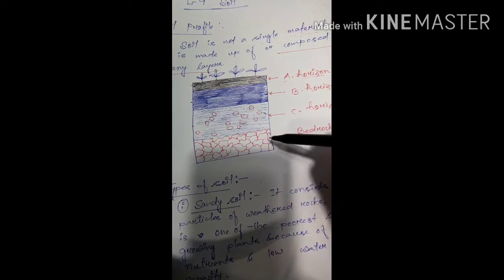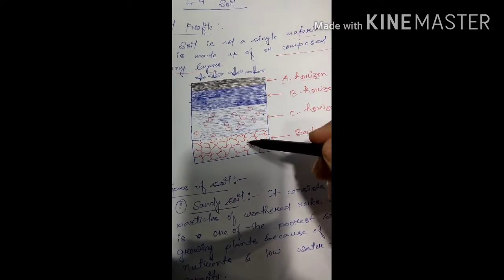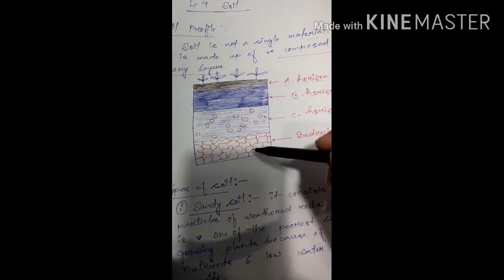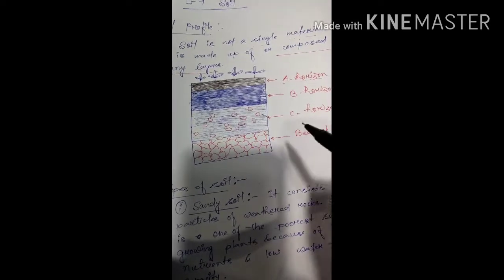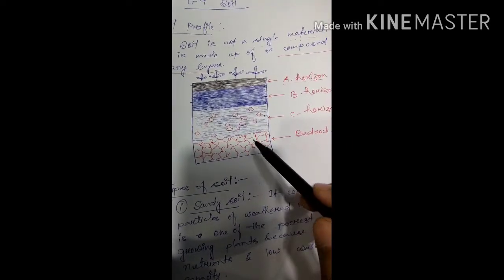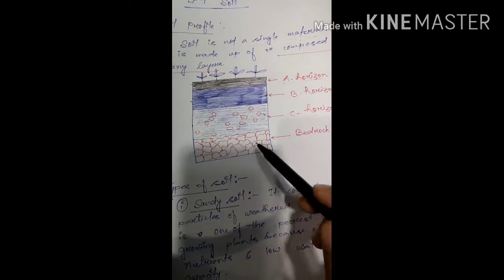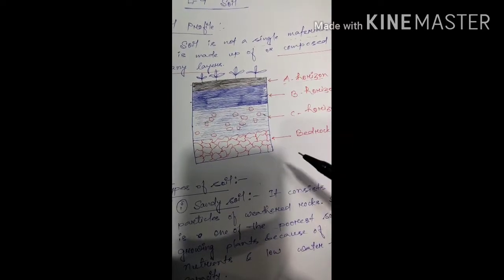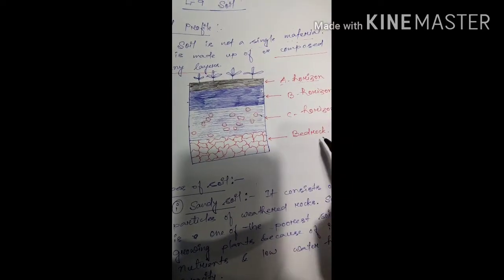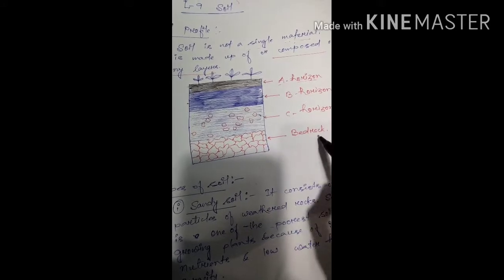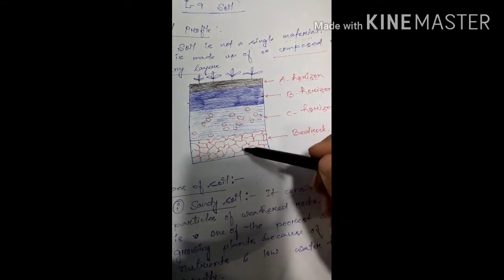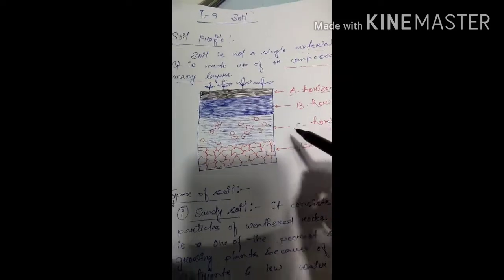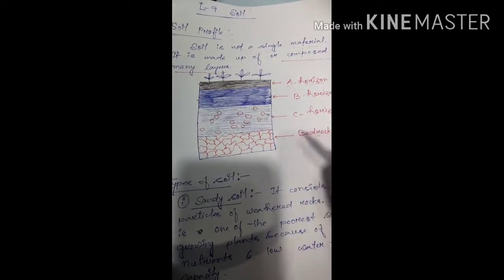The fourth layer is bedrock. In the bedrock you can see different boulders and big rocks. In this fourth layer we find only rocks, but they will eventually get converted into soil over time. This is all about the soil profile.